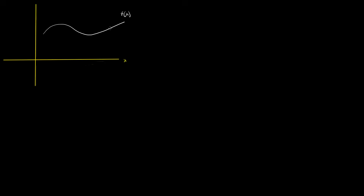Say I have a function f of x that looks something like this graph, where I've plotted the value of x on the horizontal axis and the value of f of x on the vertical axis. Suppose I want to determine the behavior of this function — is it increasing at a certain point like x naught over here, or is it decreasing?